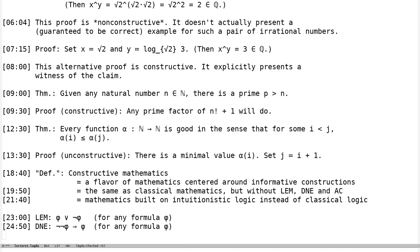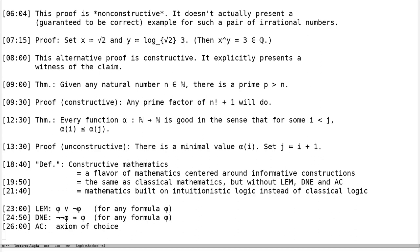AC is the axiom of choice — we'll discuss it in more detail tomorrow. Two remarks: first, it's not an axiom of logic but of set theory (or type theory) layered upon logic. Second, the axiom of choice implies the law of excluded middle, so if we want to do without LEM we are forced to also do without AC. Finally, LEM and DNE are in fact equivalent principles — that will be an exercise.